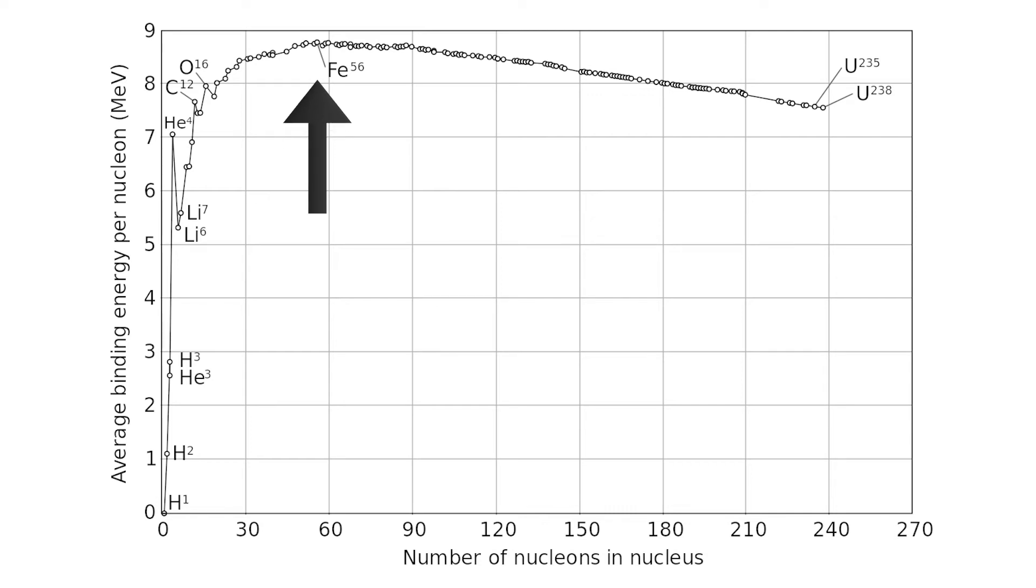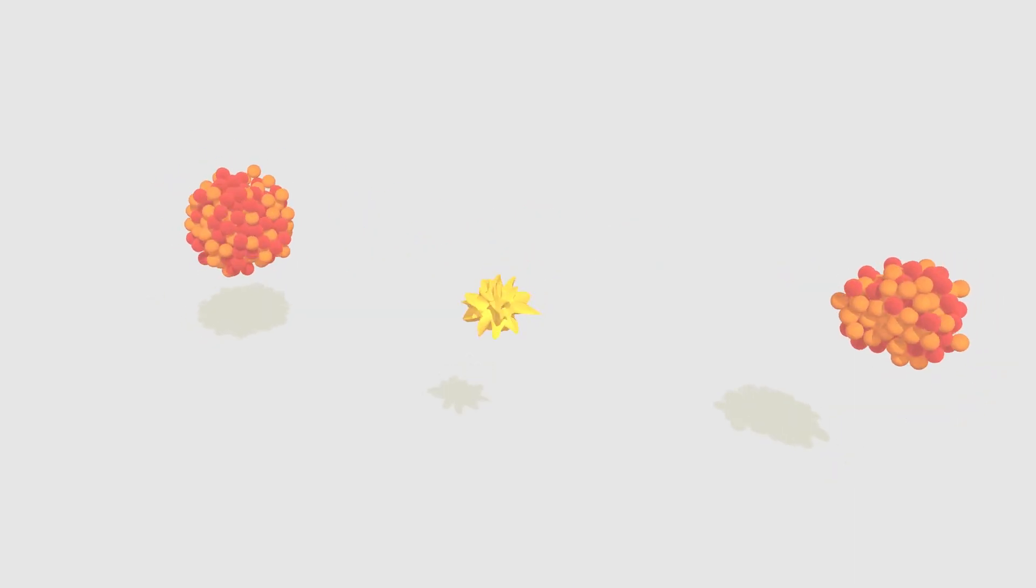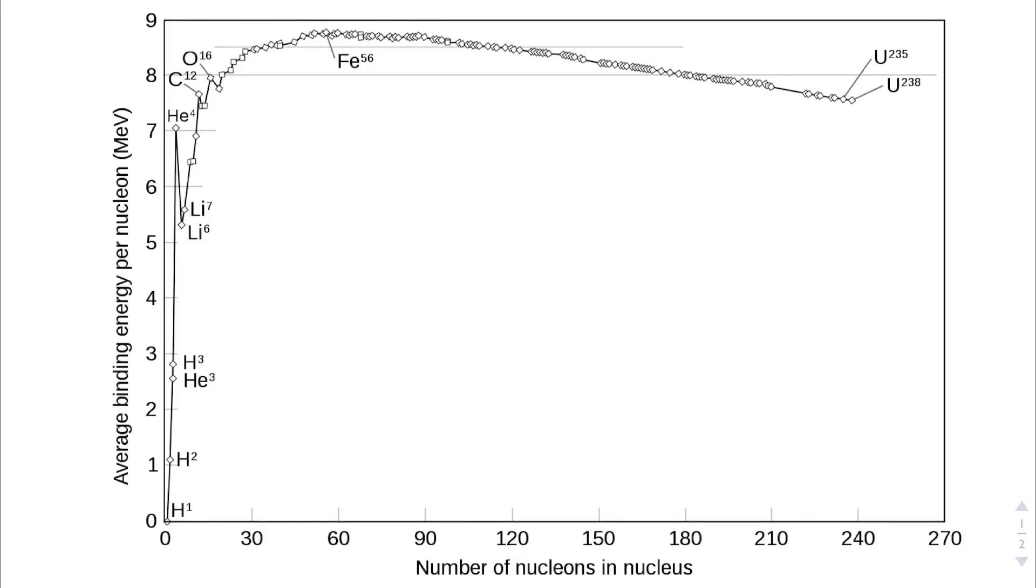We see that iron is most tightly bound. Elements with more nucleons than iron can bind stronger by fissioning, so they will lose some protons, so to speak. For example, uranium is heavier than iron, and so the nucleus can bind stronger by splitting into two smaller nuclei.